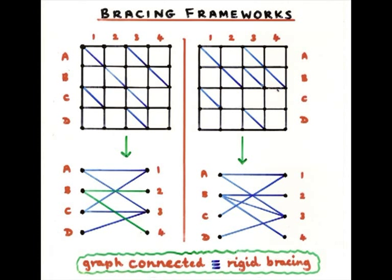And it turns out to be the case that if the graph is all connected up like this, then it's rigid. And in fact, if it's a tree structure, if there's no cycles, then it turns out to be a minimal one. You can't remove any braces and still have it rigid.